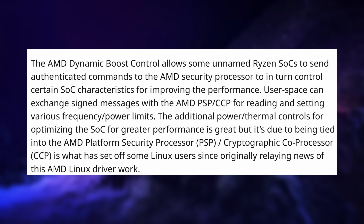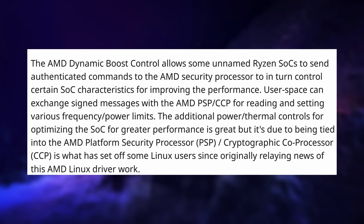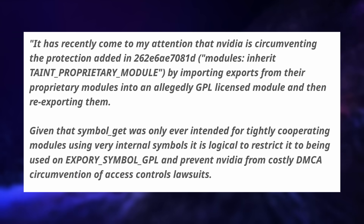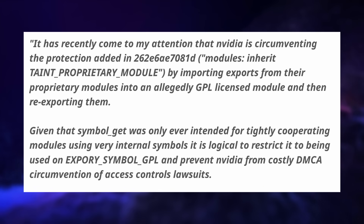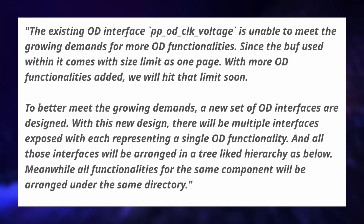Kernel 6.6 should also introduce AMD dynamic boost, plus a manager for virtual addresses for GPUs which should improve Vulkan support, and some more control over Intel graphics that could yield up to 15% better performance. The kernel will also have additional protections against illicit behaviors of the NVIDIA drivers, as the proprietary NVIDIA drivers do some weird stuff to use GPL-only symbols even though they're not provided under the GPL. And as for 6.7, we might see some better overclocking support for AMD GPUs.